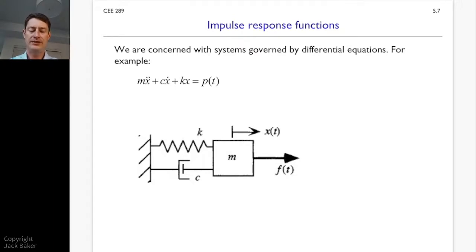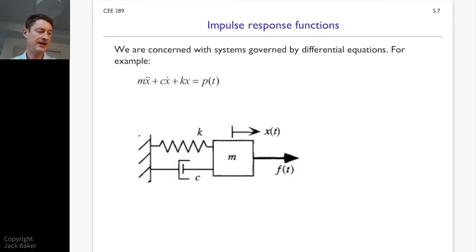We're going to look at the system illustrated by this figure. We've got a fixed support on the left, a spring with stiffness k, a damper that's velocity dependent with damping coefficient c, and then a mass m. We're measuring the displacement x(t) of that mass, and the whole system can be excited by f(t).